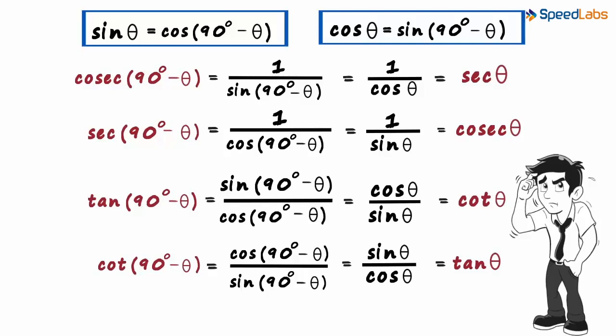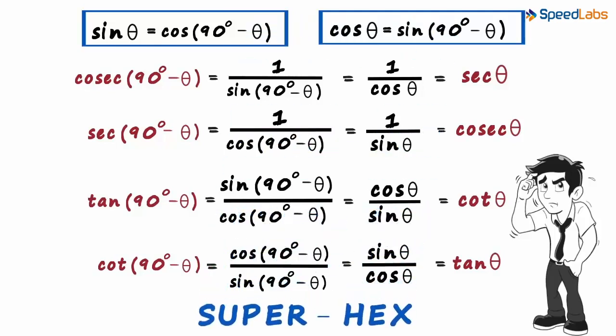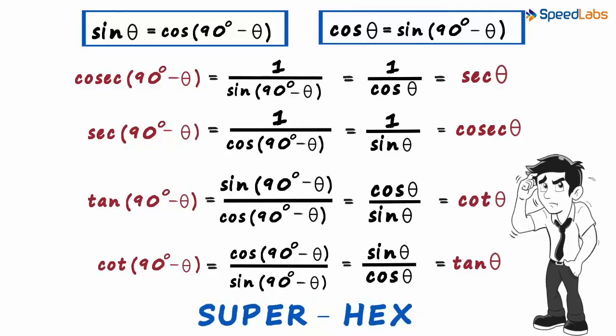But there is an answer to all our trigonometric worries — it's the super hexagon. There is this one polygon we need to remember in order to know all the trigonometric formulae. This one hexagon will help us remember many formulae and identities. Do not forget to watch our video on the super hex.